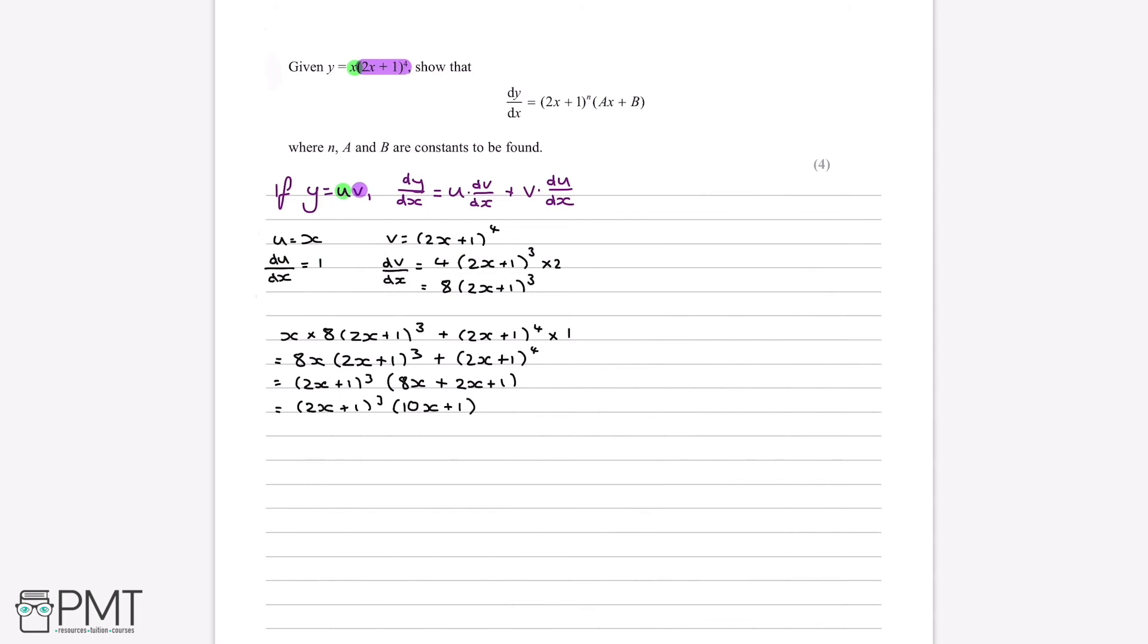You can see now this form is very similar, if not identical, to the one in the question. We have 2x plus 1 to the power of n, and here n is equal to 3. And then ax plus b, where a is equal to 10, and b is equal to 1.